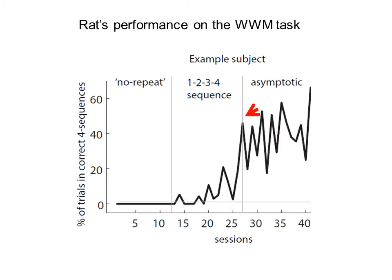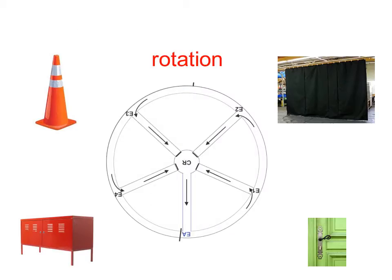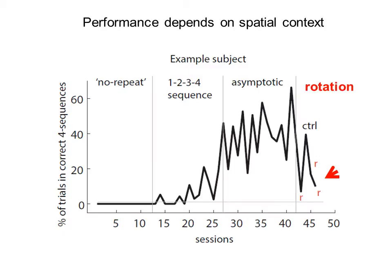Rats learned this task after two to three weeks of daily training, but rotation of the maze relative to contextual cues results in substantial decrease in their performance levels, indicating the need for a stable representation of context, possibly stored in hippocampus as a spatial map.